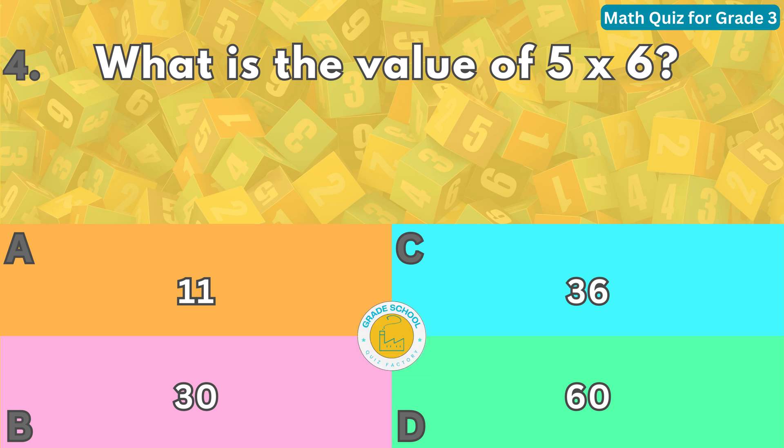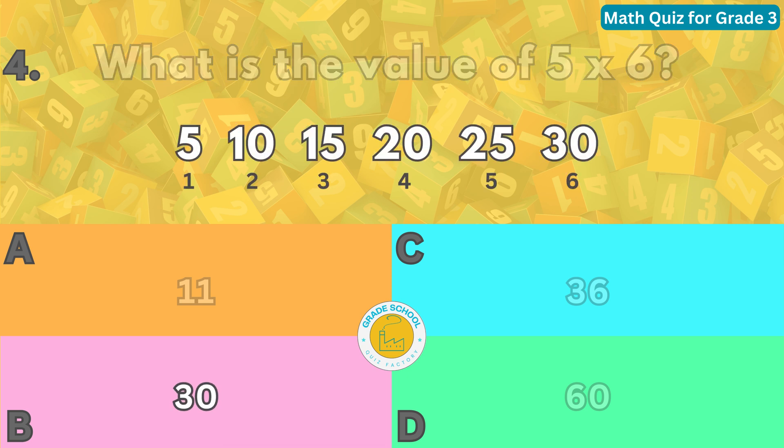The correct answer is letter B. To find the value of 5 times 6, we multiply 5 by 6 and get 30.